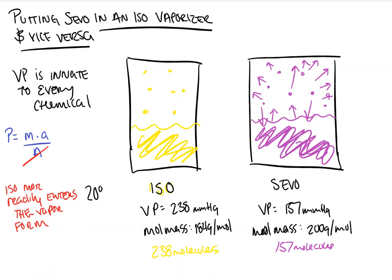So if we were to place isoflurane — which as a function of its chemical structure is more readily turned into a vapor — into the sevo tank, which is designed to try and liberate more molecules from something that is less likely to go from liquid to vapor, it means that we will overdose the patient. Because putting iso in a sevo vaporizer will lead to excessively more iso molecules being liberated than they would in a normal isoflurane container.